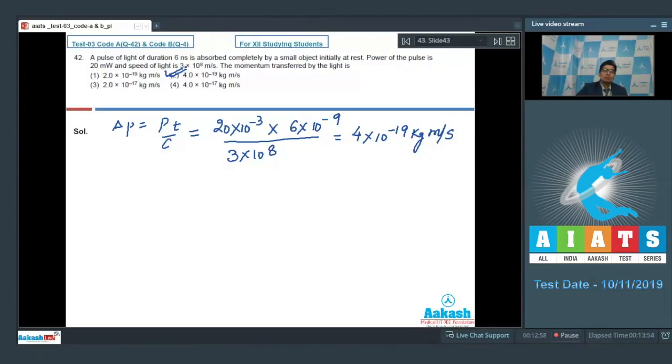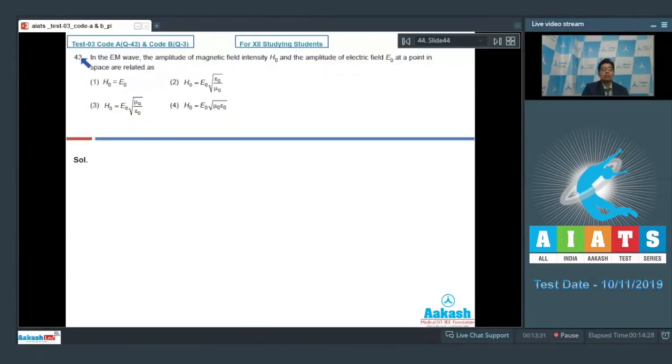Let us proceed to question number 43. In the EM wave, the amplitude of magnetic field intensity H0 and amplitude of electric field E0 at a point in space are related as: